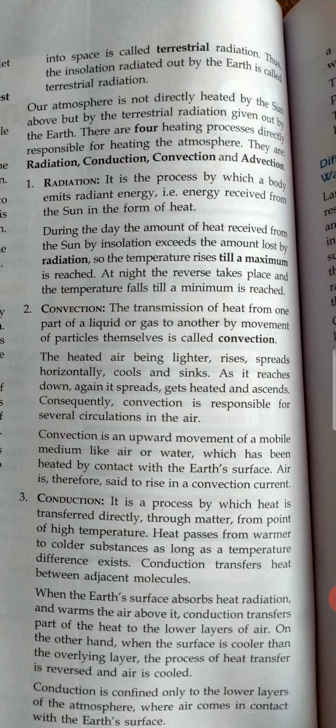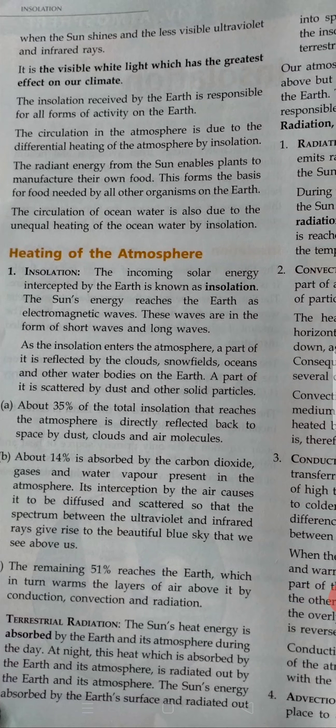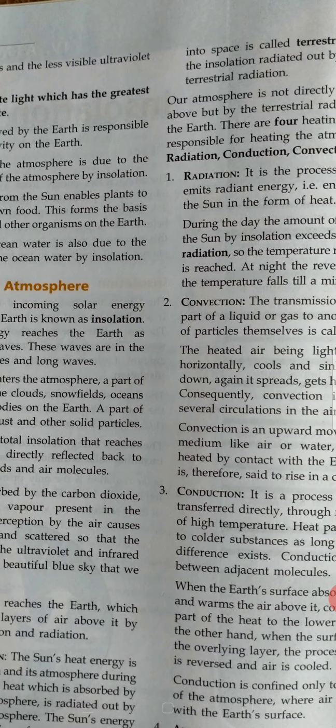So we have seen two definitions in our syllabus: one is insolation, which is incoming solar radiation, and the second is terrestrial radiation, which is the heat absorbed by the earth and then released back into the atmosphere.